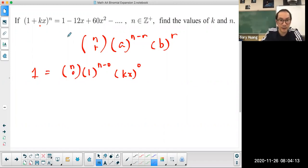Now let's look at the second term. Second term is negative 12x. Now what happens in the second term?